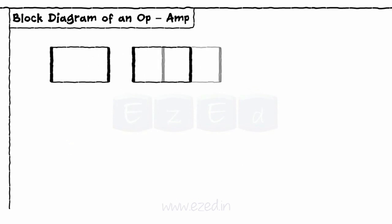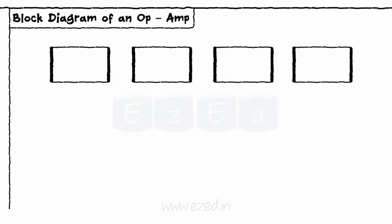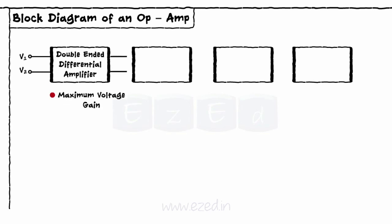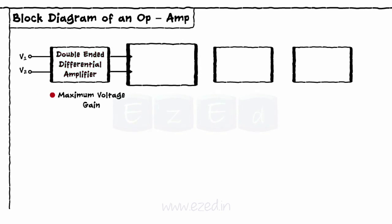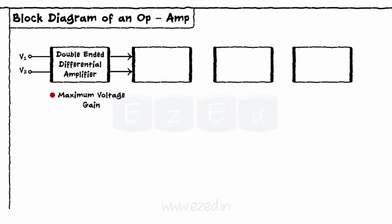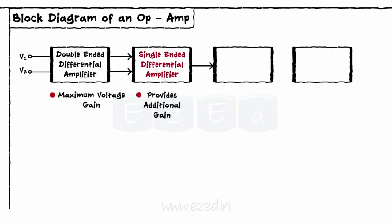The first block is a double-ended differential amplifier. It provides maximum voltage gain. It has two inputs and two outputs, hence it is called a double-ended differential amplifier. The second block is an intermediate stage known as a single-ended differential amplifier. It provides additional gain to the amplifier and has only one output, hence the name single-ended.